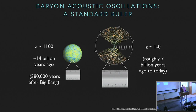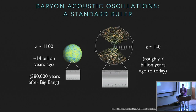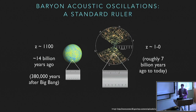The Baryon Acoustic Oscillations are what is called a standard ruler. Roughly 380,000 years after the Big Bang — about 14 billion years ago — the cosmic microwave background forms. This is radiation essentially coming from that time to us, like the blueprint for the universe. The pattern of density at that early time imprints on this radiation, and we can see it — it has hot and cold spots with a characteristic angular scale of about one degree on the sky. That acts as one ruler.